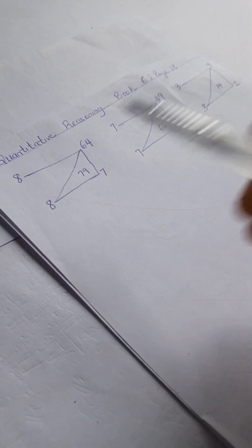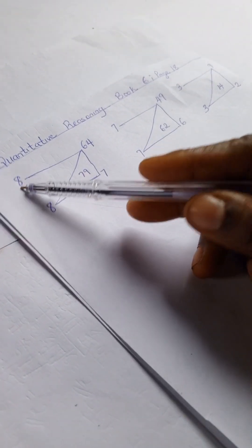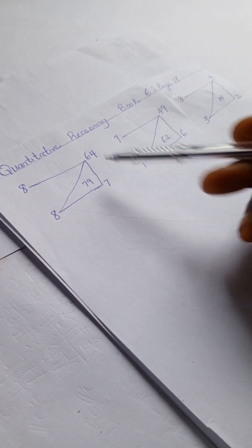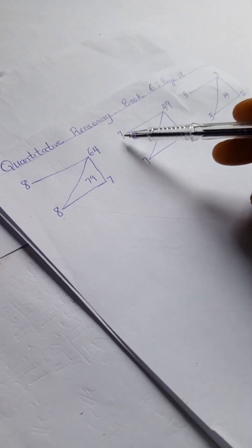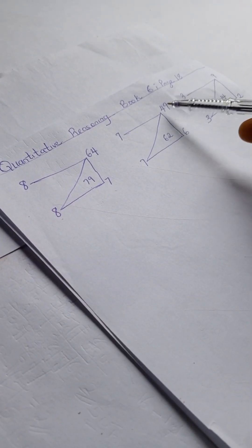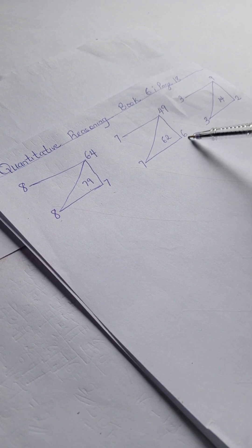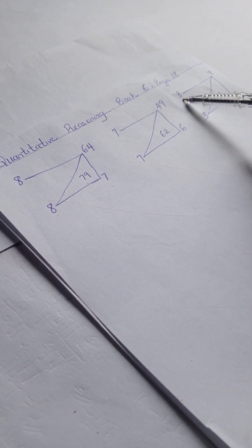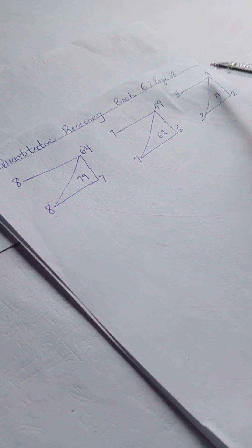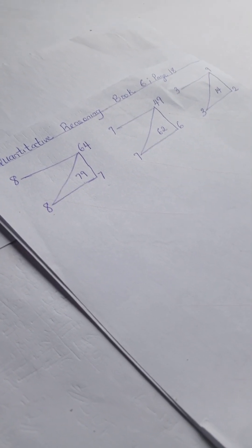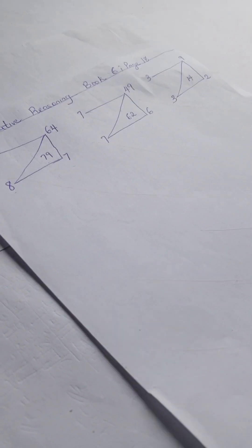So we have this problem. We have 8, 8, 79, 64, and 7. Here we have 7, 7, 62, 49, 6. And here we have 3, 3, 14, 9, and 2. We're going to be solving this.